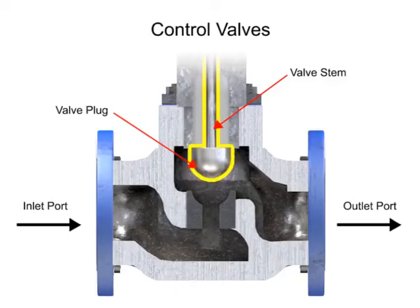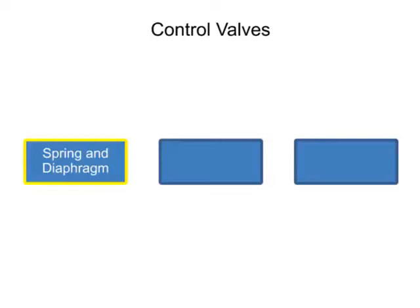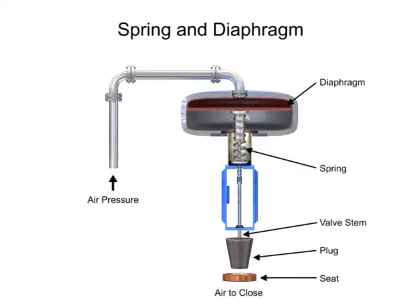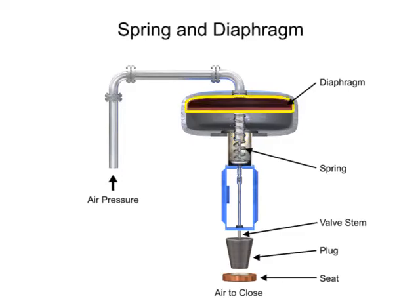Three actuator types are used in control valves: spring and diaphragm, solenoid, and motor. As the name suggests, the spring and diaphragm actuator uses a spring and a diaphragm to move the valve stem and plug.